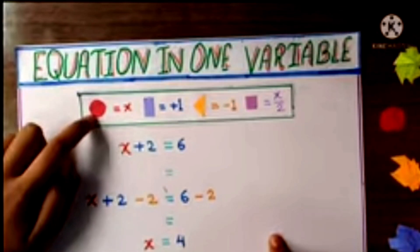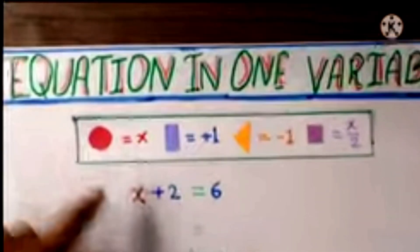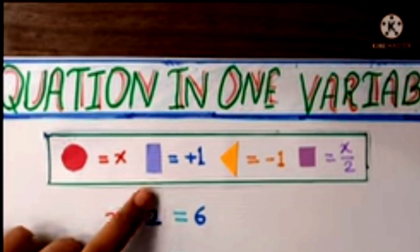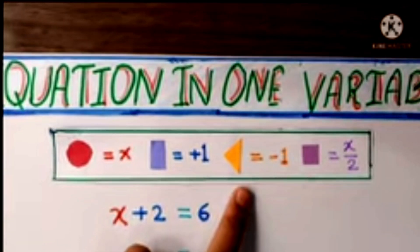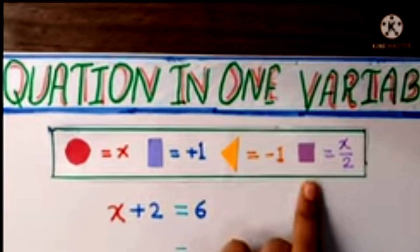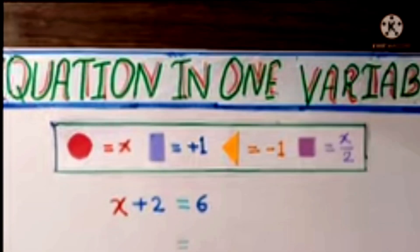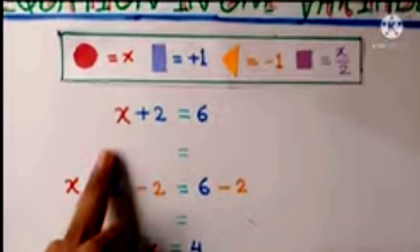So here, circle is equal to x, rectangle is equal to plus 1, triangle is equal to minus 1, and this square is equal to x by 2. Now let's solve this.